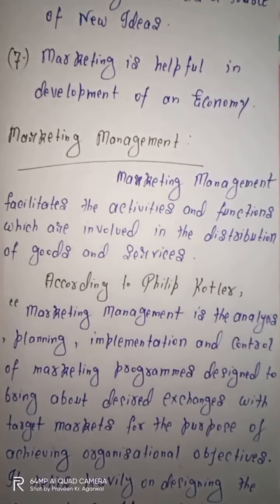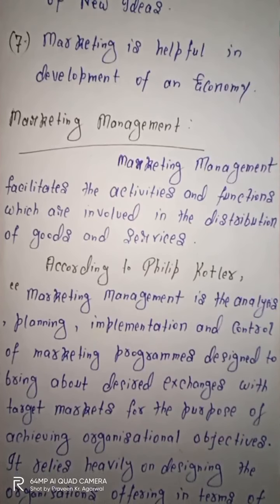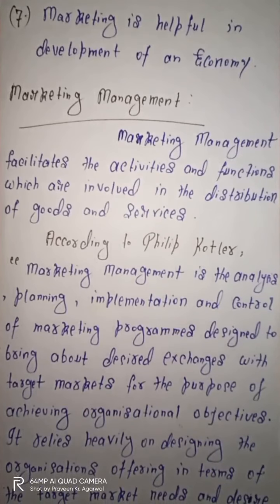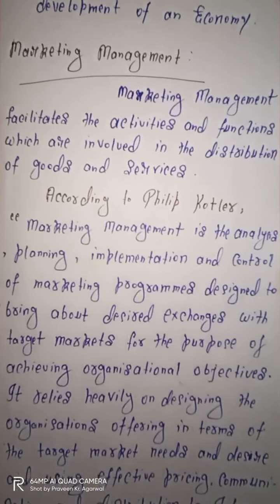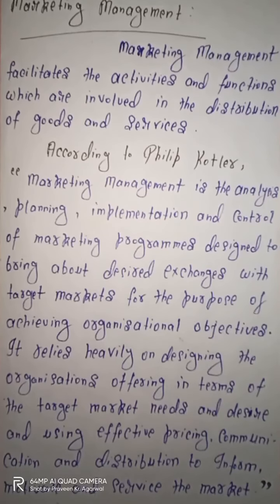Now we come to the next topic, which is marketing management. We are now talking about marketing management. Marketing management has two parts: the first is marketing and the second is management. Marketing management facilitates the activities and functions involved in the distribution of goods and services. Philip Kotler has provided a definition: marketing management is the analysis, planning, implementation, and control of marketing programs designed to bring about desired exchanges with target markets for the purpose of achieving organizational objectives.